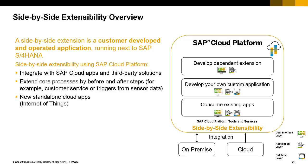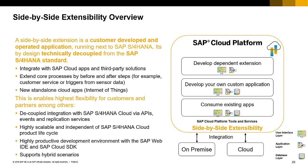Now we'll take a look at side-by-side extensibility. This is for custom development and is generally done within our SAP Cloud Platform. You can integrate SAP Cloud applications and third-party applications through this. It extends our core processes with before and after steps — for example, customer service or triggers from sensor data, and also new standalone apps for IoT applications. Side-by-side extensibility is more advanced than in-app extensibility and requires more of a development mindset. It provides flexibility for customers and partners to develop their own applications using cloud SDKs and the Web IDE. It is highly scalable and decoupled from SAP S/4HANA Cloud via APIs, events, and replication services, and also supports hybrid scenarios.